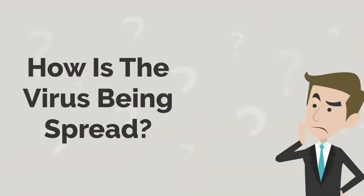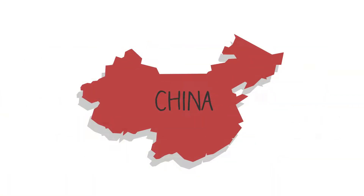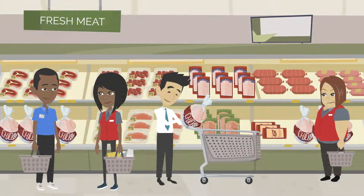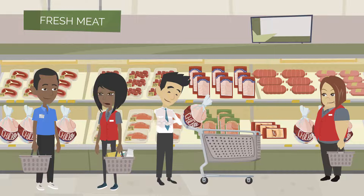How is the virus being spread? Many of the patients in Wuhan, China, have reportedly been linked to a large seafood and animal market, suggesting animal-to-person spread, but human-to-human transmission has been confirmed.